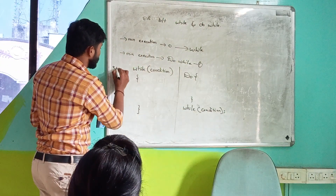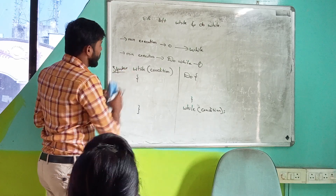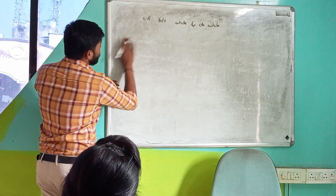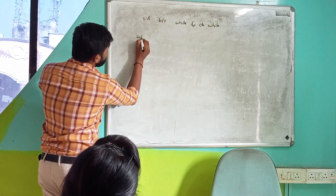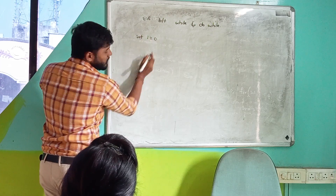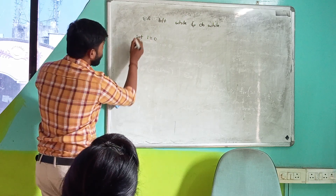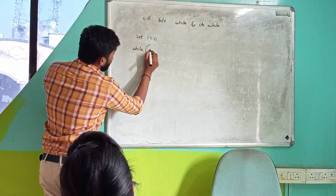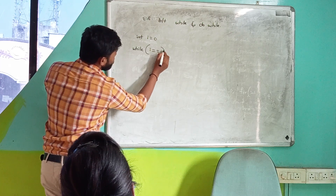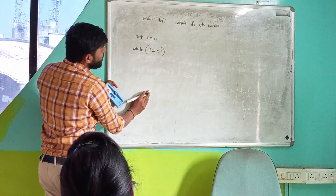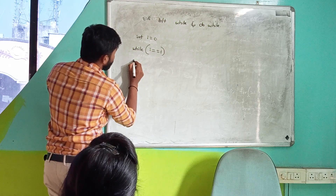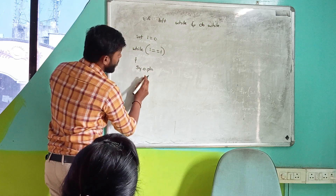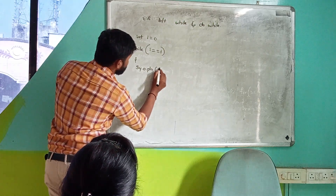Now you can see I'm arranging the whole thing. Here I'm declaring one variable: int i = 0. When approaching the while loop, the condition is while i equals 1.